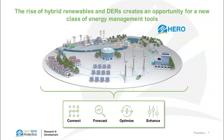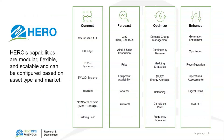HERO is a product that sits between the individual resources being dispatched and the system operators controlling the scheduling and dispatch of those resources. We aggregate the capabilities of different resources together so that we can provide a cost schedule or cost curve for any arbitrary bundle of those resources. That's provided to a system operator or market operator, which in turn provides a dispatch. That dispatch is then disaggregated back out to all the resources in the most efficient manner possible. The HERO tool has four key features: Connect, Forecast, Optimize, and Enhance.